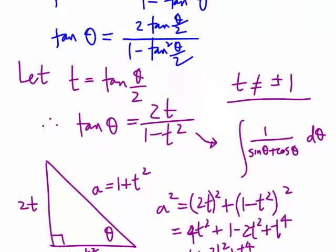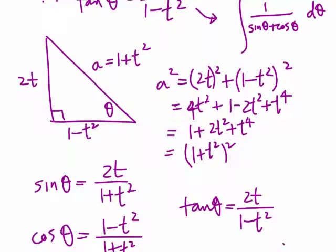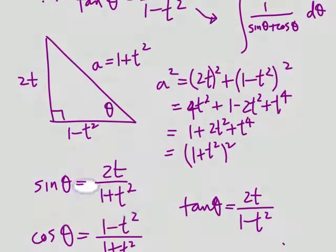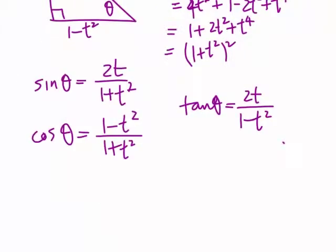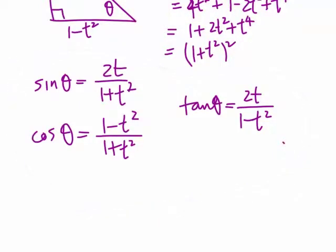To get the other t-results, we draw a triangle where tan = 2t/(1 − t²) and use Pythagoras: the hypotenuse is √(1 + t²), so a = 1 + t². This gives sin θ = 2t / (1 + t²) and cos θ = (1 − t²) / (1 + t²). These t-results are used extensively in trig equations and calculus integration.